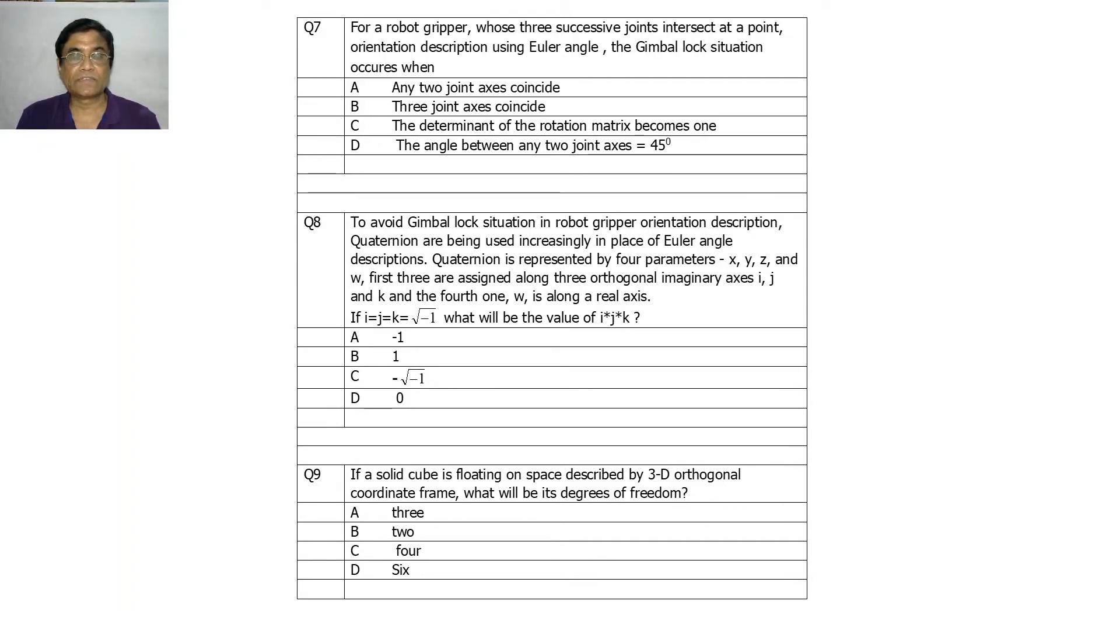For a robot gripper, next question is, whose three successive joints intersect at a point, orientation description using Euler angle, the gimbal lock situation occurs when? I have a number of videos which is describing gimbal lock situation. So, which one is correct? What is gimbal lock situation? As you know, the orientation required three orthogonal axes to represent correctly orientation. So, that is, if three z-axis, for example, an aircraft, a fighter aircraft, vertical. It has yaw, pitch, and roll.